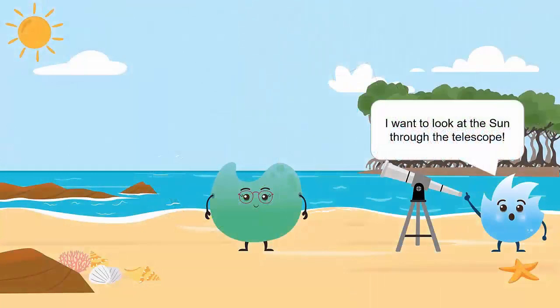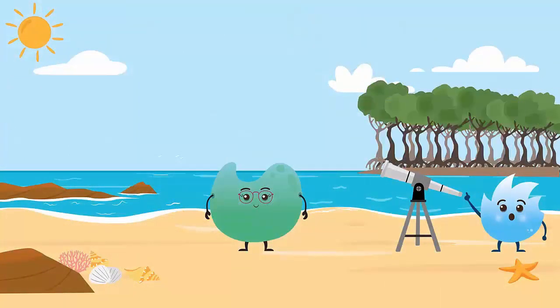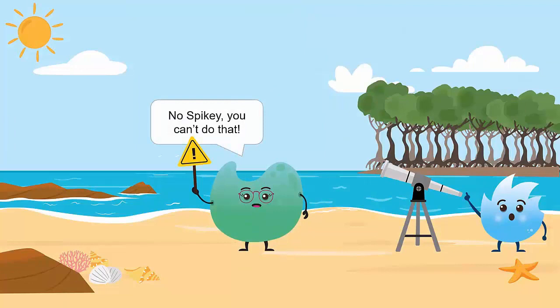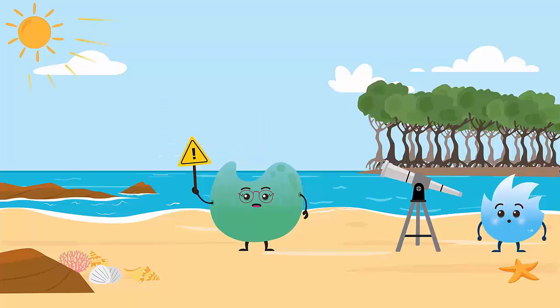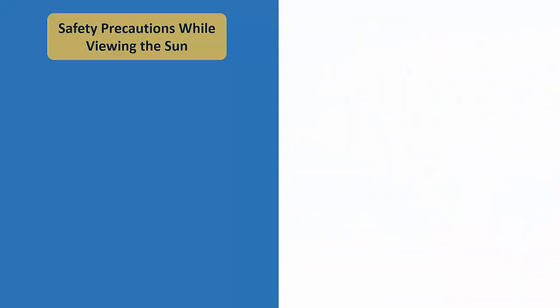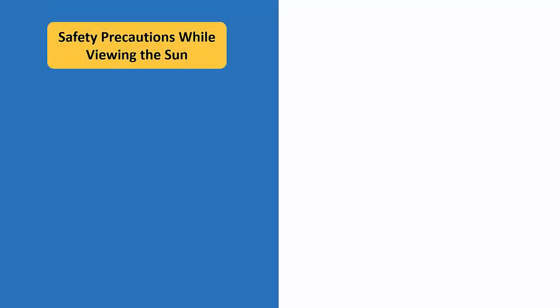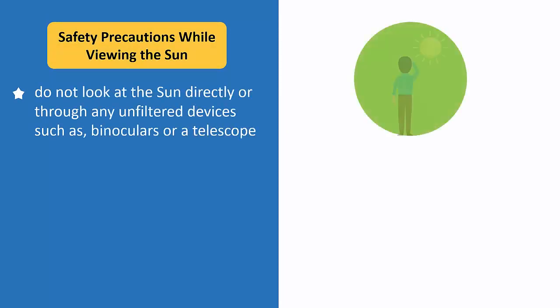Oh, I want to look at the sun through the telescope! No, Spikey, you can't do that! We can go blind from looking directly at the sun. The light rays are too strong for our eyes. If you really want to see the sun, you must follow the following precautions.